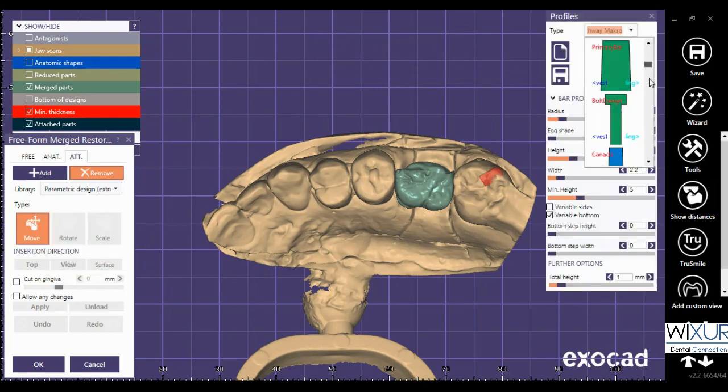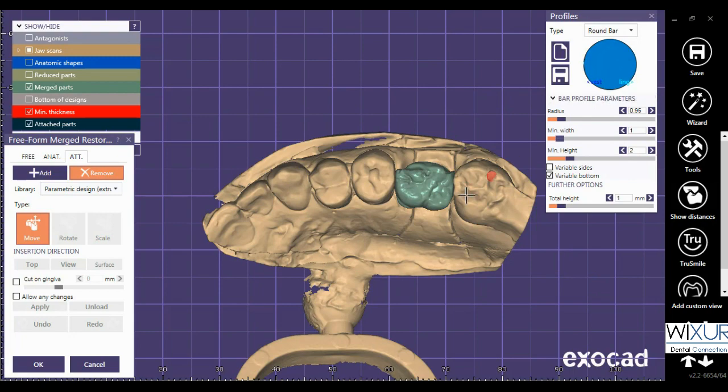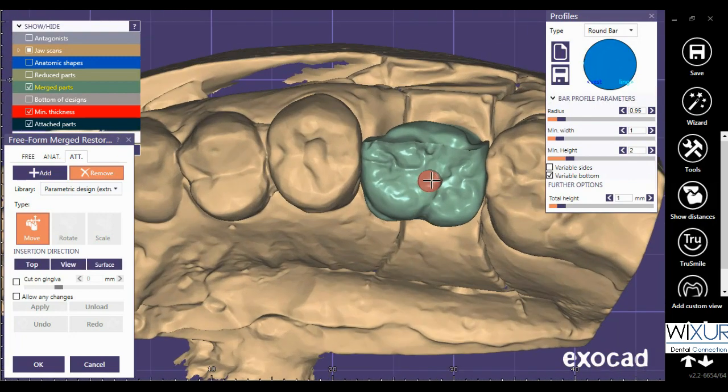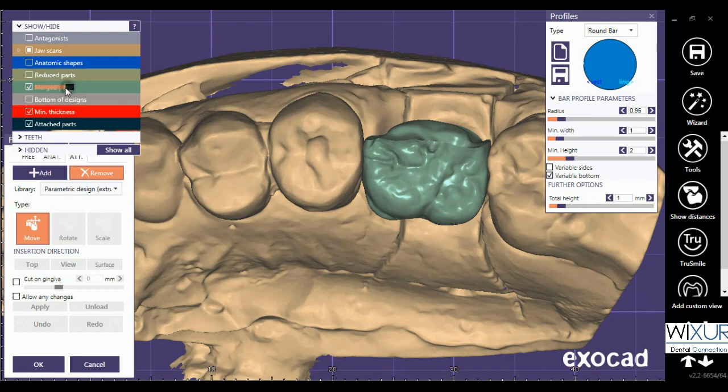Choose the desired type of hole. I continue with round bar. I place it on the occlusal side of the crown.